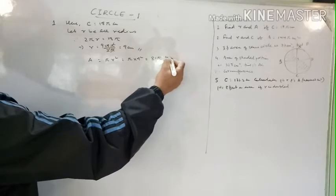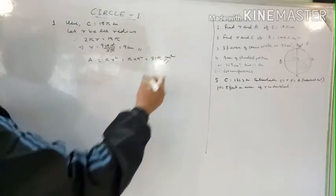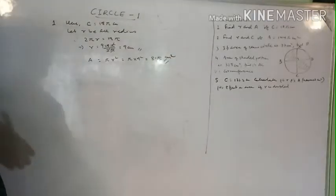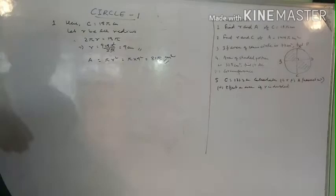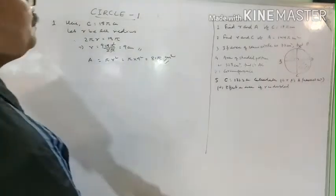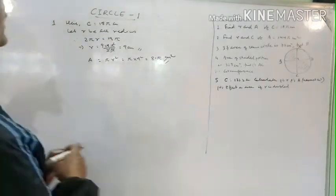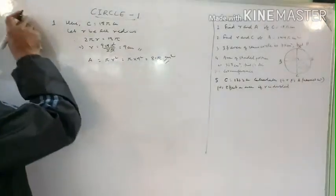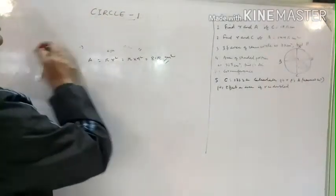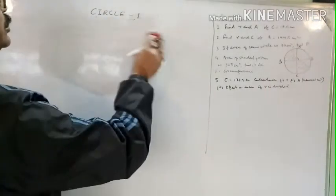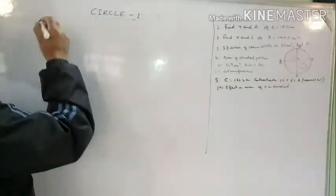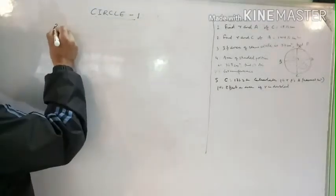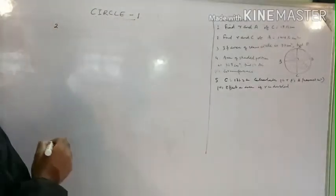Now find the area. Area equals πr² equals π times 9² equals 81π centimeter square. The unit is centimeter square because it is area.